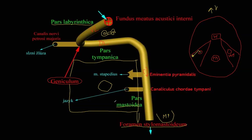Now the branches. The first branch is a somatomotor fiber for the stapedial muscle. The stapedius muscle is inserted on the stapes bone, holding the stapes in the vestibular window — the oval window — which is between the tympanic cavity and the inner ear.